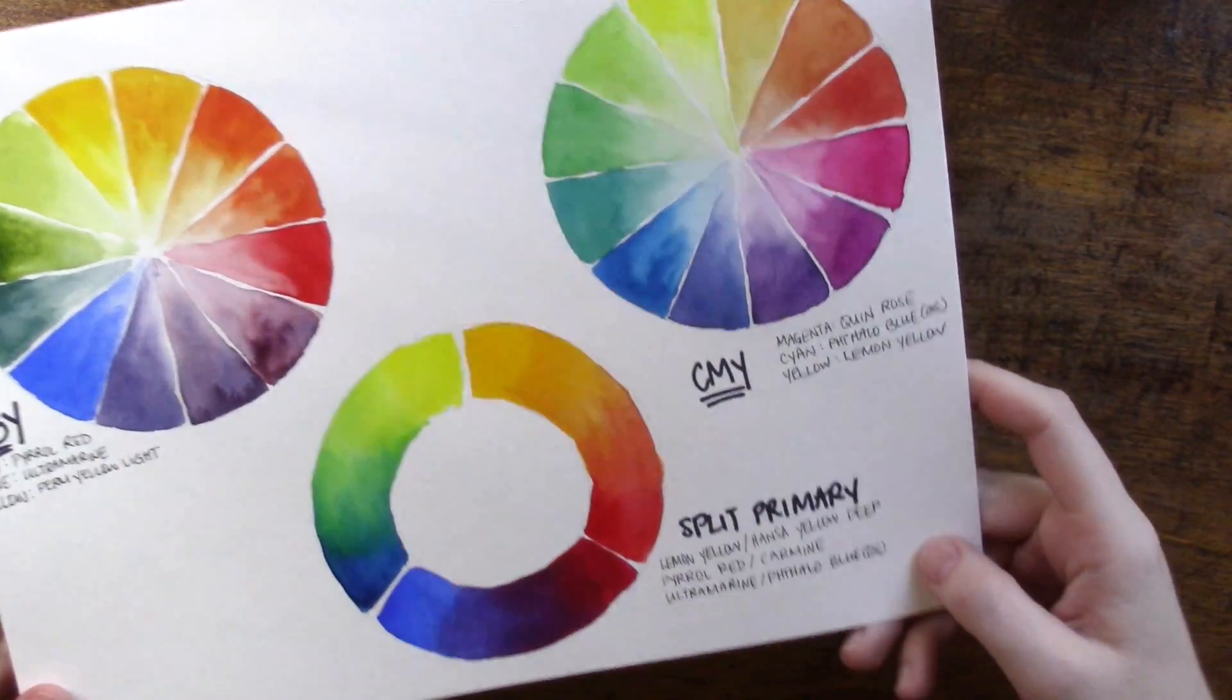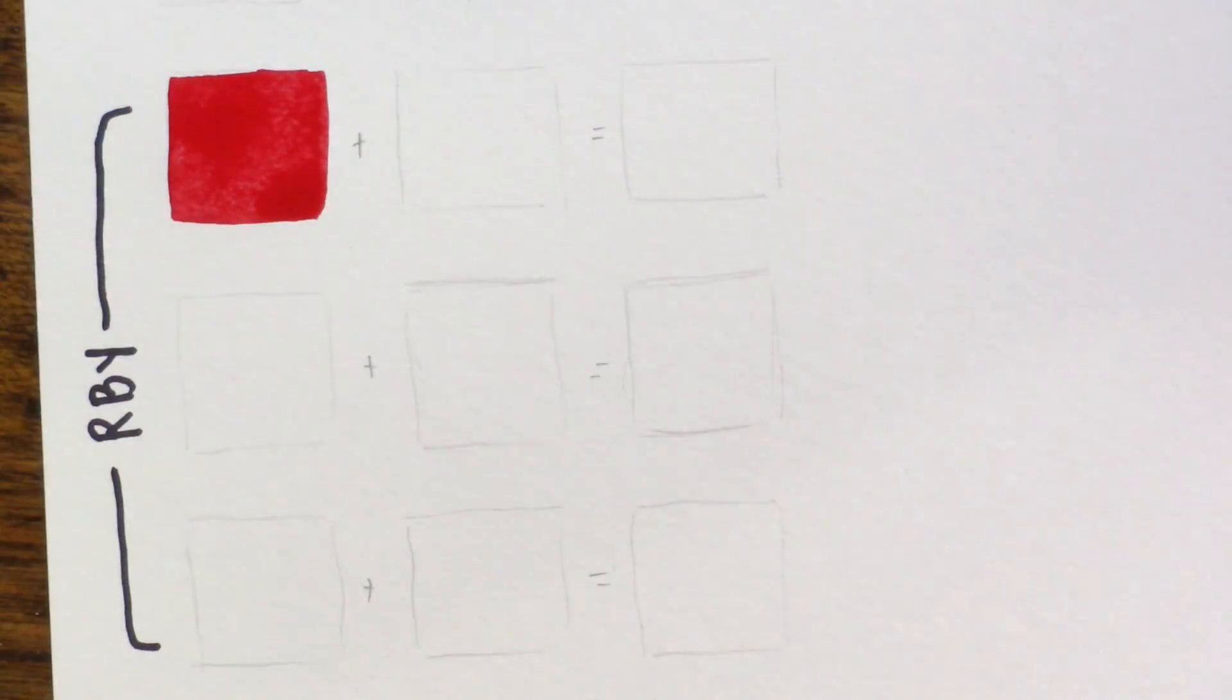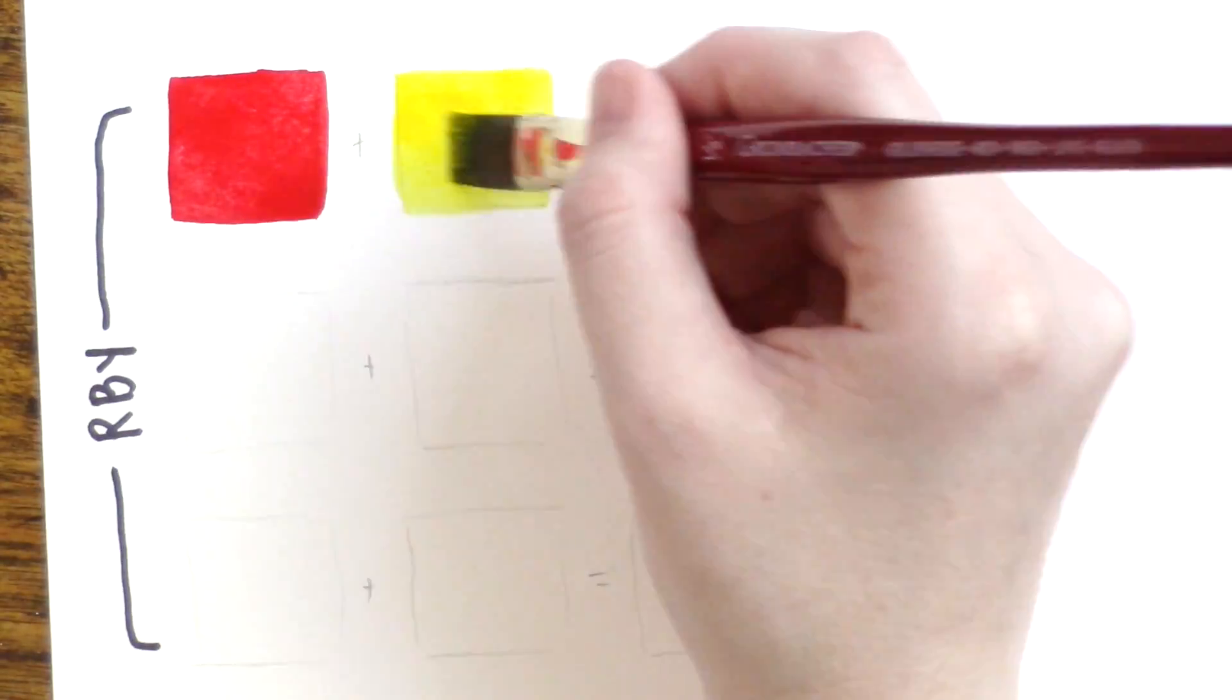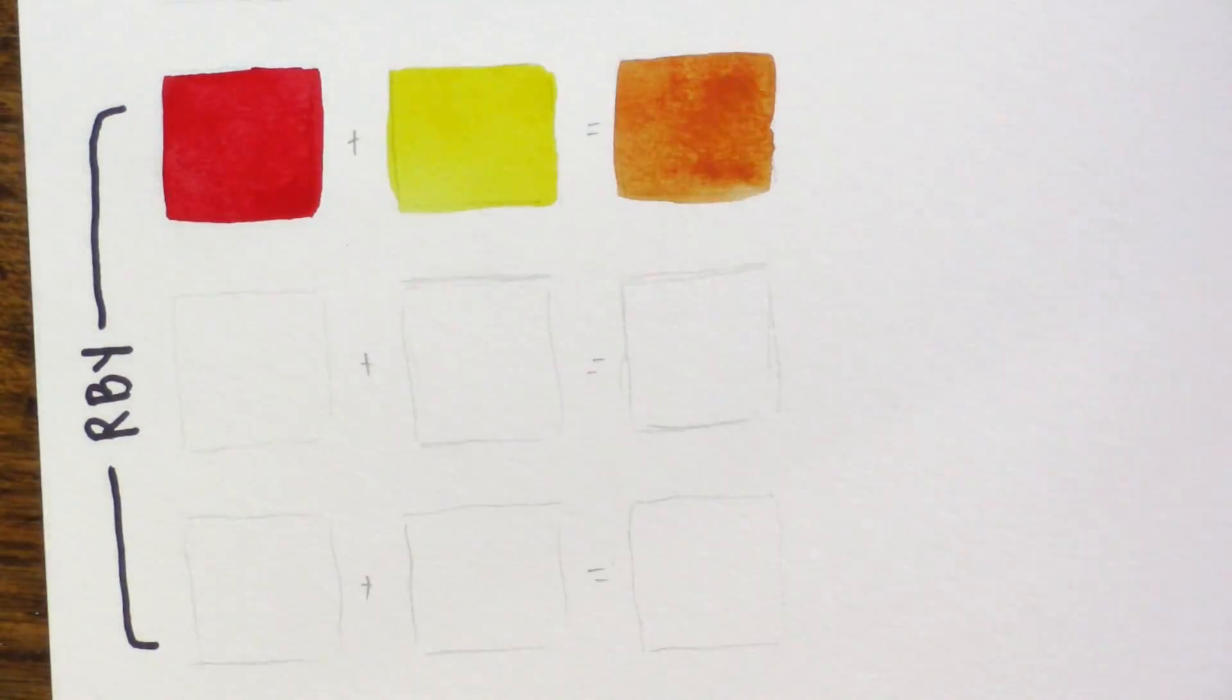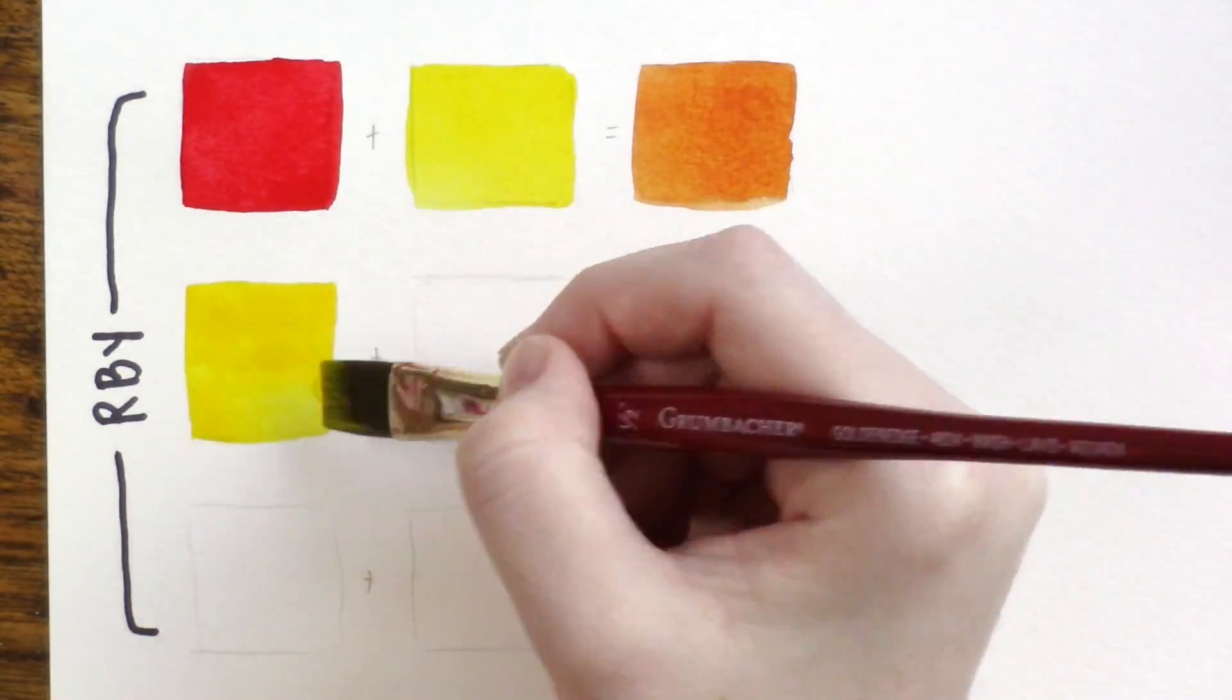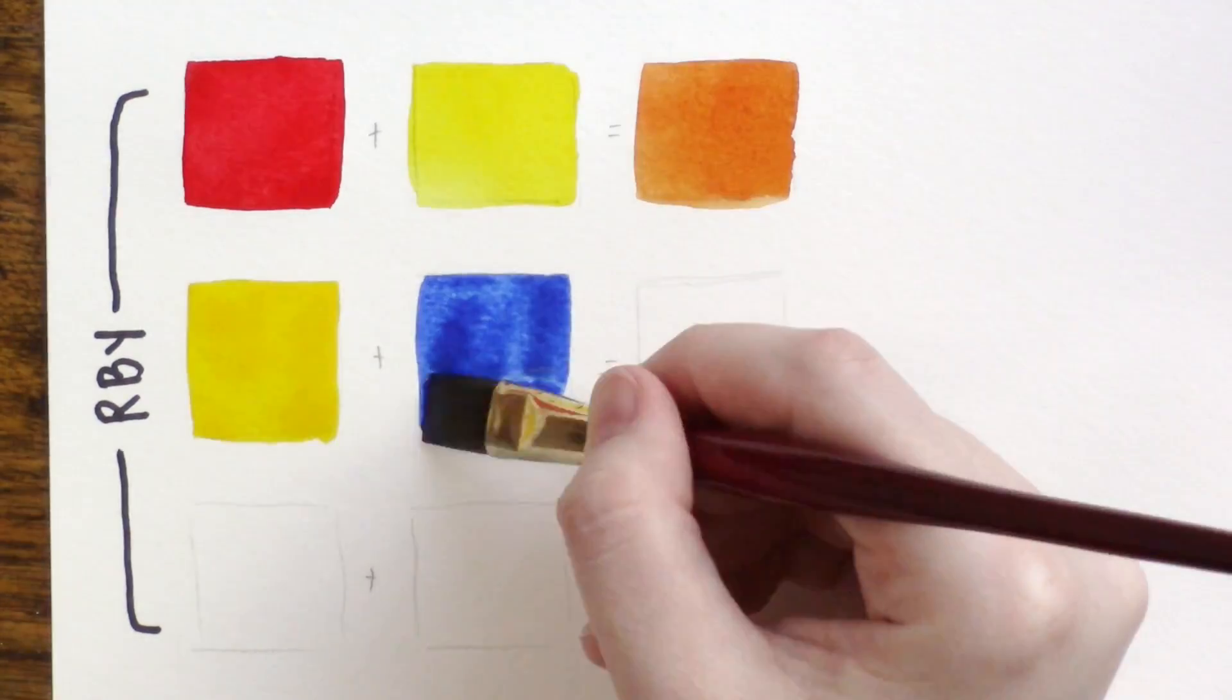In my color mixing purple video from a couple weeks ago, we talked a little bit about the difference between additive and subtractive mixing. That's when you take light versus when you're mixing with paint. The two are very different, and today we're clearly talking about what happens when you mix paints together.